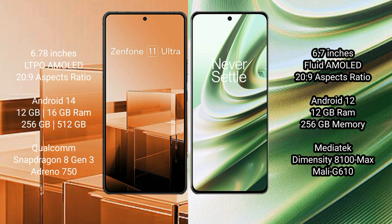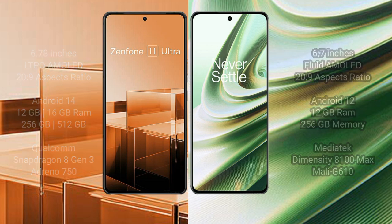Asus Zenfone 11 Ultra comes with 12GB or 16GB RAM and 256GB internal storage, powered by the Snapdragon 8 Gen 3 processor. OnePlus 10R comes with 12GB RAM and 256GB internal storage, powered by the MediaTek Dimensity 8100 Max processor.